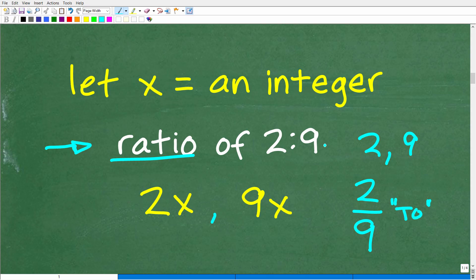So the fraction bar is the word to. You could also write this as two, the colon symbol, and then nine. This is notation that we use in math to represent a ratio. But a ratio is effectively a fraction. And this gets into a much bigger topic about ratio rates and proportions. We're going to keep it simple for the purposes of this video.